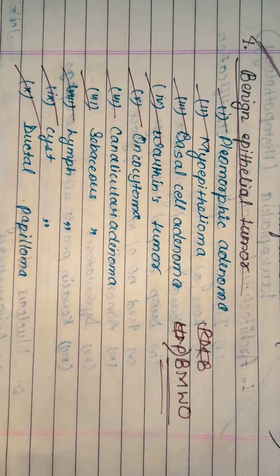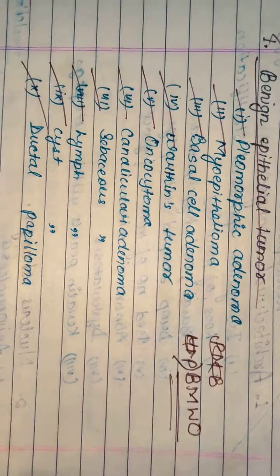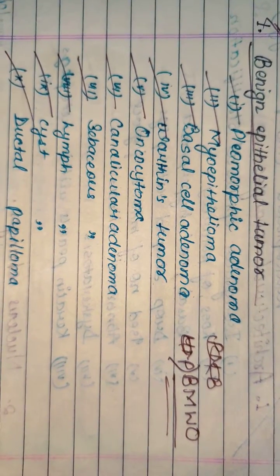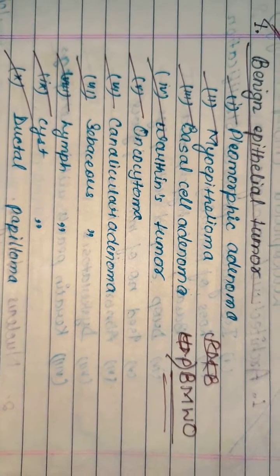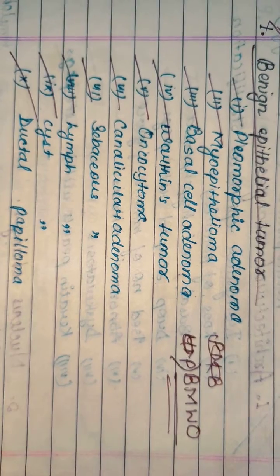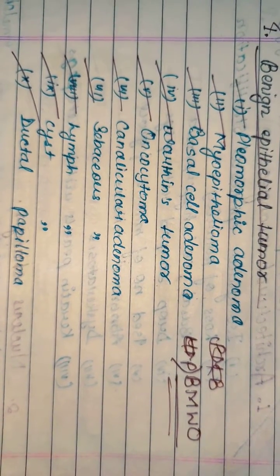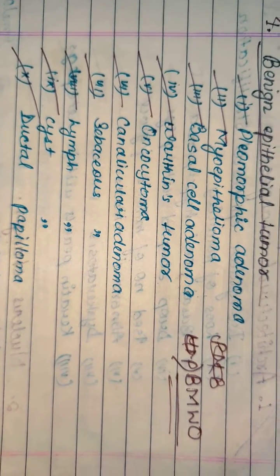The first one is pleomorphic adenoma. The second is myoepitheloma. The third is basal cell adenoma. The fourth is Warthin's tumor. The fifth is oncocytoma. The sixth is canalicular adenoma. The seventh is sebaceous adenoma.